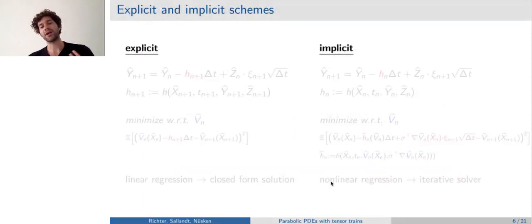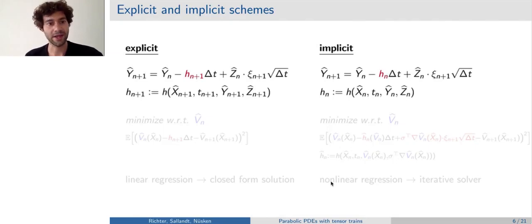I didn't tell you yet how actually we do these steps, these red arrows. And for this, we have actually two schemes available, an explicit and an implicit scheme. And they come from these two ways of discretizing the backwards process. I wrote them down again here. And these two ways differ in whether I take this h_n plus one, or h_n, which I highlighted in red here.